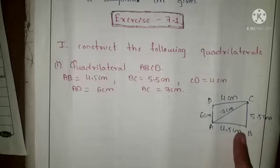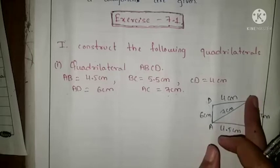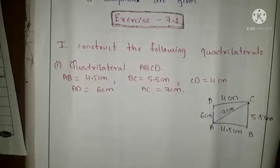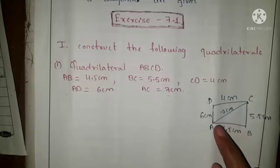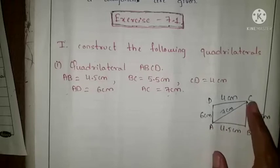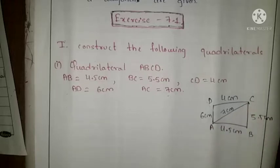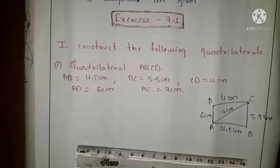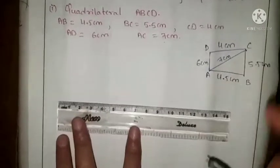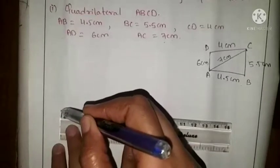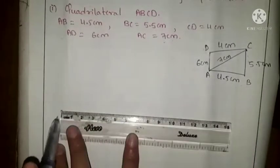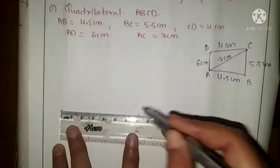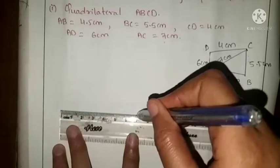According to this we have to start the construction. We always have to start with a base side — you may select AB as a base side or AC as a base side; with any side you can start. For this question I am going to use AC as the base side. AC = 7 cm. Take your scale and pencil, and draw the line segment AC = 7 cm, measuring from 0 to 7.